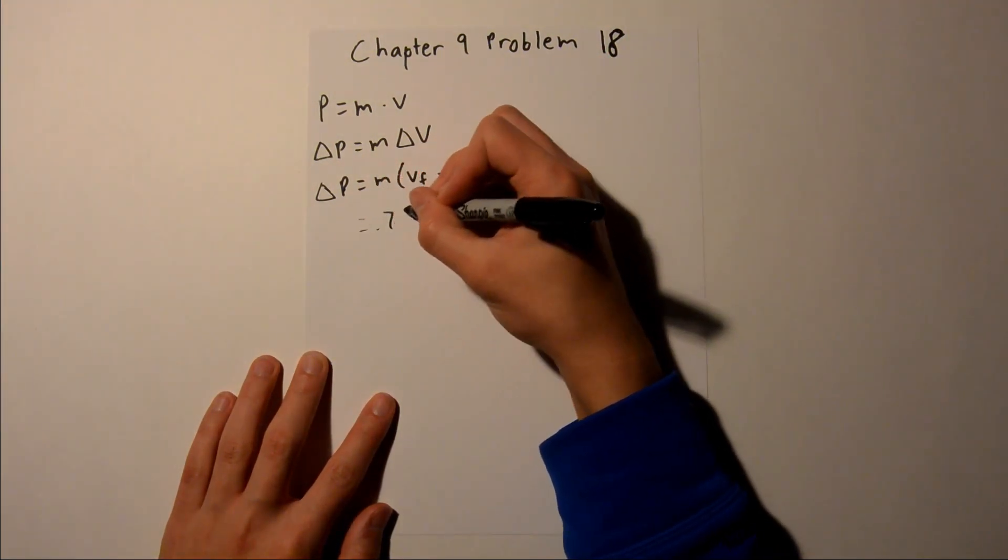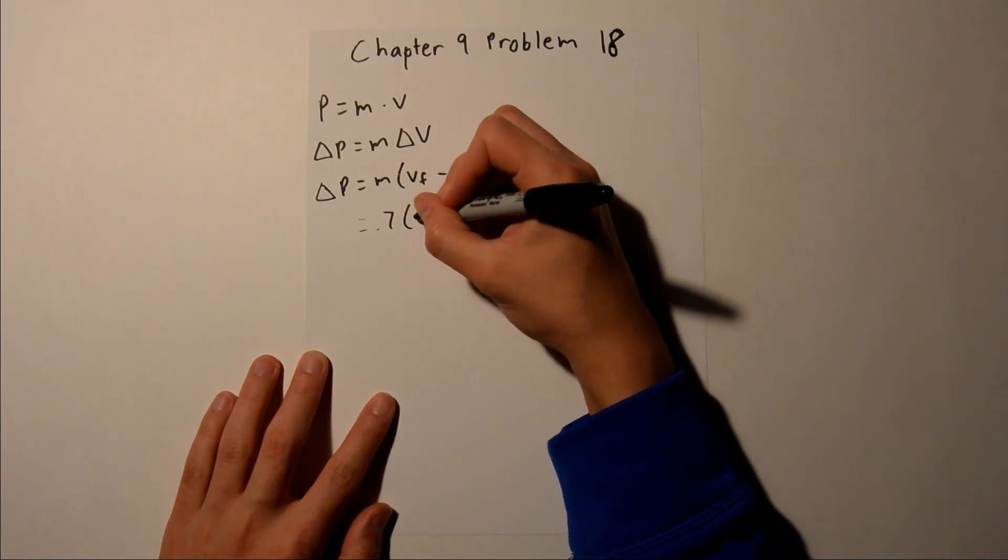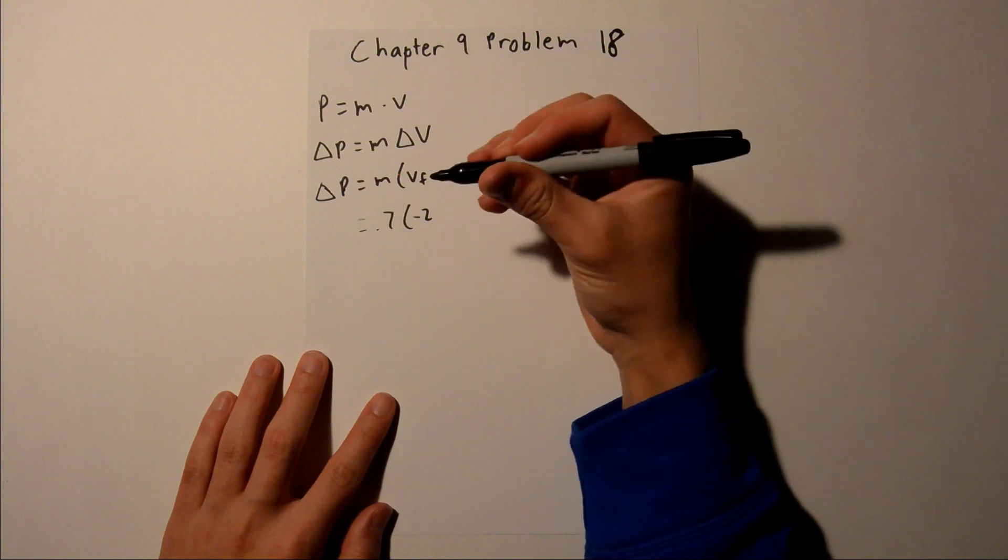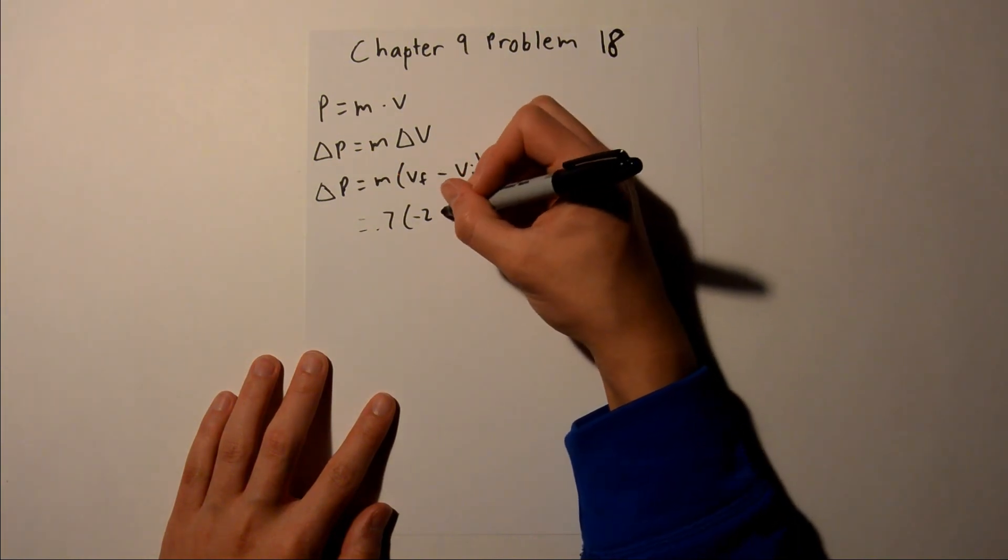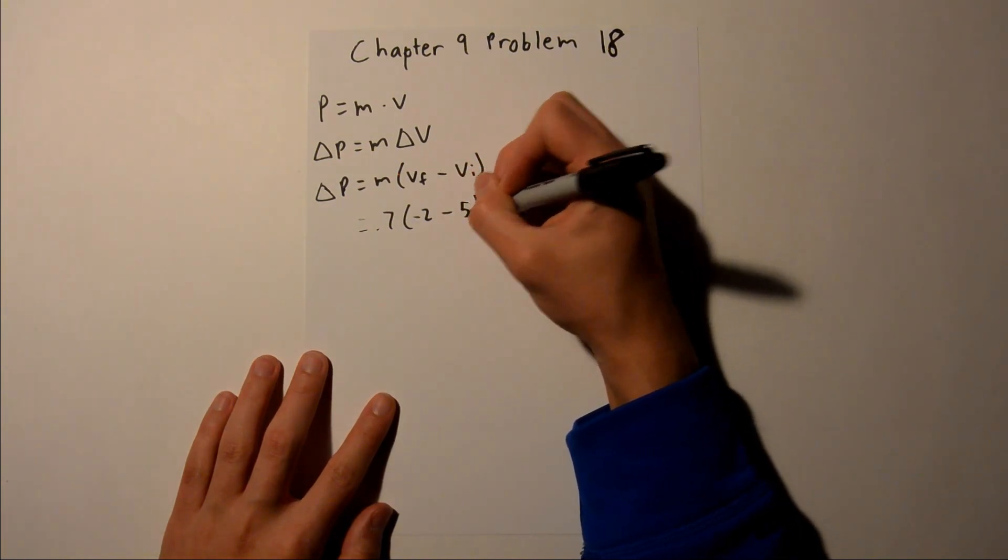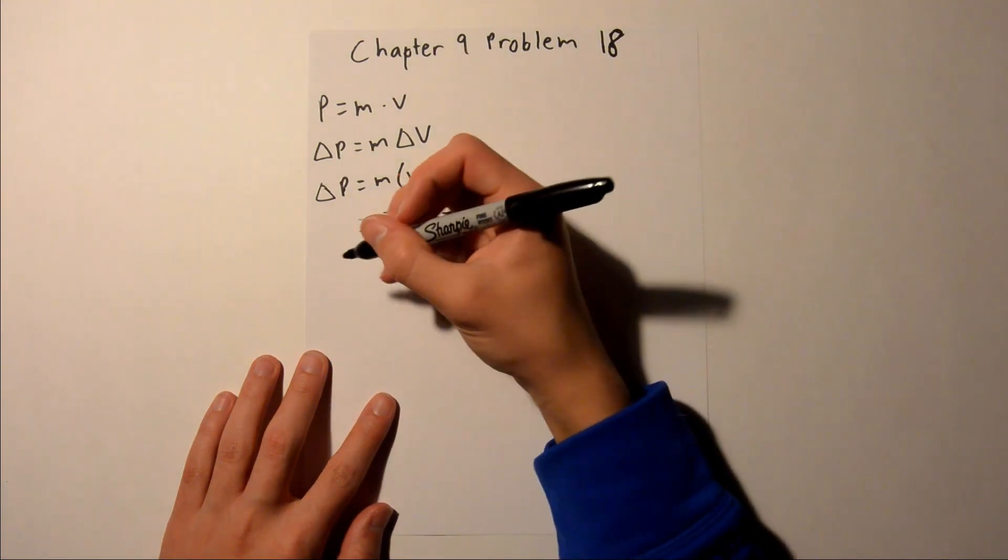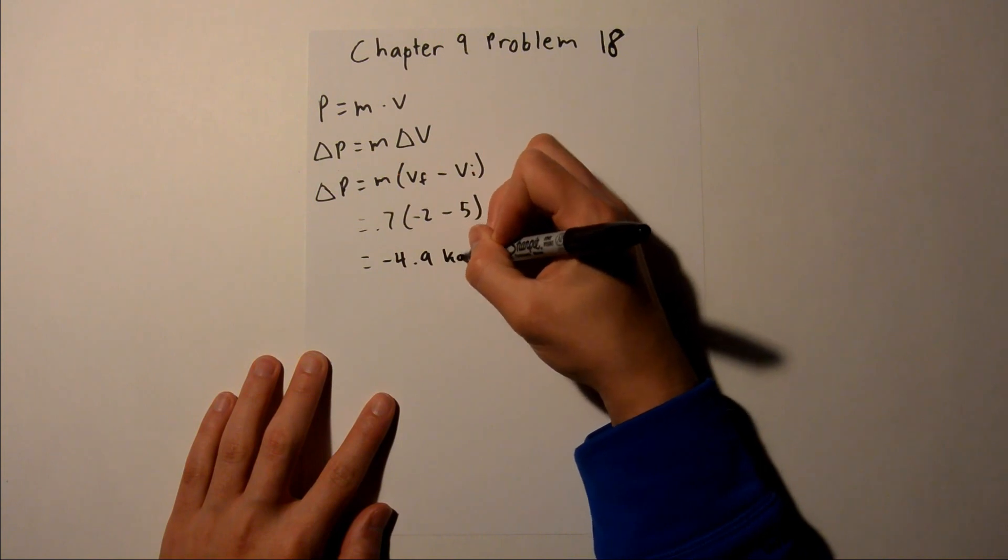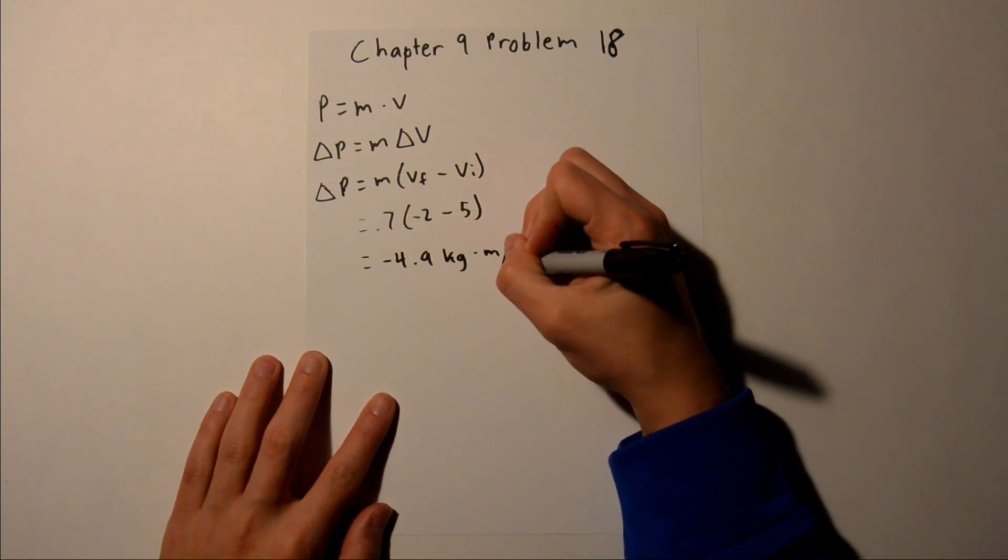Our mass is 0.7. Our final velocity is actually negative 2 because it's going in the negative x direction. And our initial is 5. And if you put that into your calculator, you should get negative 4.9 kilograms times meters per second.